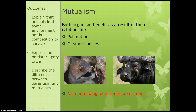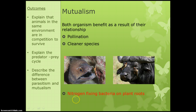Another example is oxpeckers and buffalo. You often see pictures of buffalo with these little birds on them — the birds keep them clean by eating the fleas off them and stopping flies from pestering them. The birds get a food source and the buffalo don't get pestered by annoying animals. For the higher paper, you also need to know that nitrogen-fixing bacteria live on plant roots, taking nitrogen from the air so the plants can use it — both organisms benefit, so it's called mutualism.